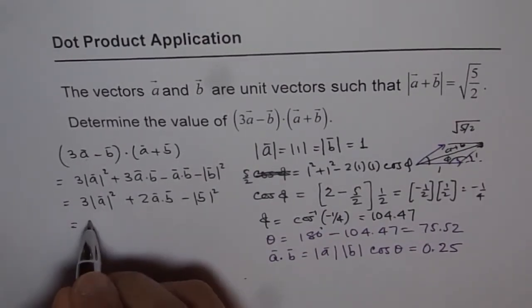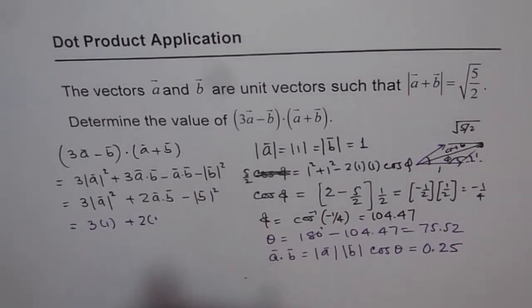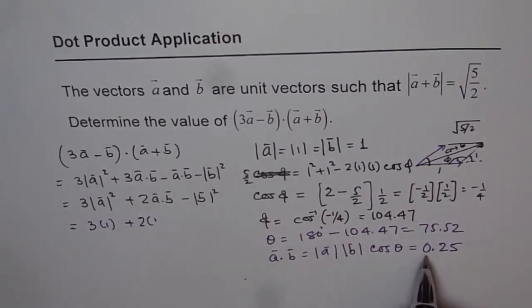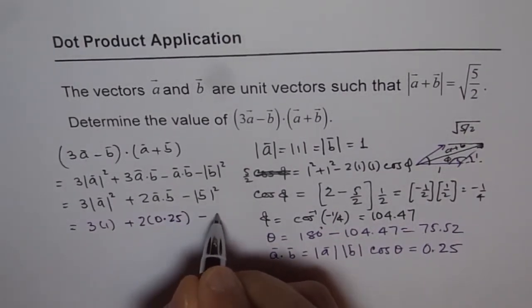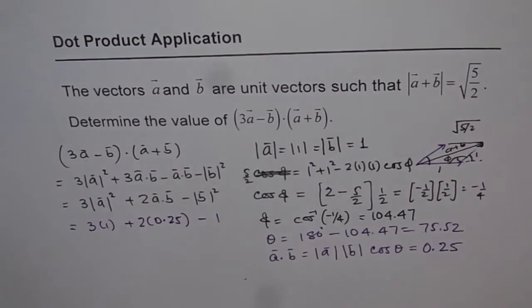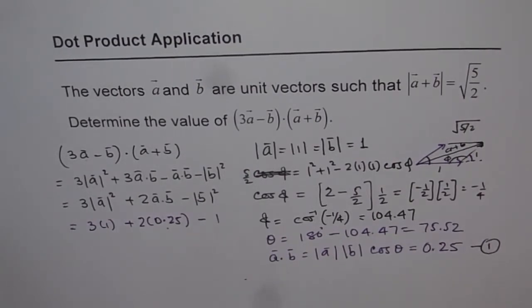So, A you know is 1, which is 3 times 1 plus 2 times A dot B, which is 0.25, minus 1. Do you see that? So we substituted this value of A dot B here.